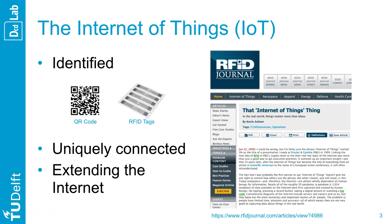He recalls the 90s when Internet diagrams were including servers and routers, while missing the most important of the routers — us, people. The Internet is about disseminating information, but people have limited time, attention and accuracy. We are simply not good at capturing data about things in the real world. Thus the promise of the Internet of Things is about making us a bit superhuman, helping us capture data from the real world onto the Internet.